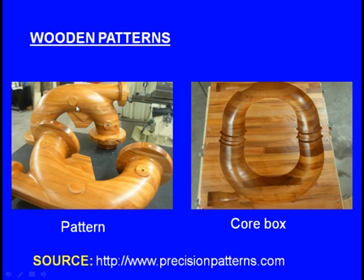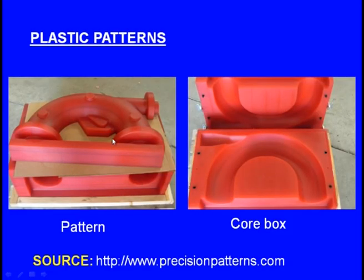When we make the pattern, a hollow cavity is created inside the moulding box. We need a hollow space within the housing, so we make a core using the core box. This core is kept inside the moulded cavity, and then we get the hollow housing. There are also plastic patterns — this is a plastic pattern for the pump housing with its core box. Using this pattern we make the mould, place the core in the correct position, and get the hollow pump housing.